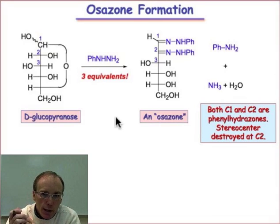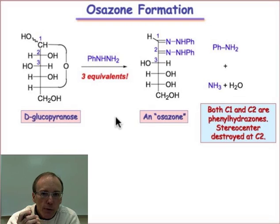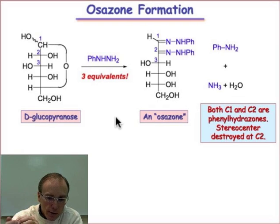We'll finish our study of monosaccharide reactions with osazone formation. While this reaction was of historical importance for the elucidation of monosaccharide structures, it's no longer useful that way. However, the chemistry is very closely related to chemistry that takes place in food science, where amines combine with sugars to make a variety of different sugar derivatives. So I still like to include this reaction in the study of its mechanism.